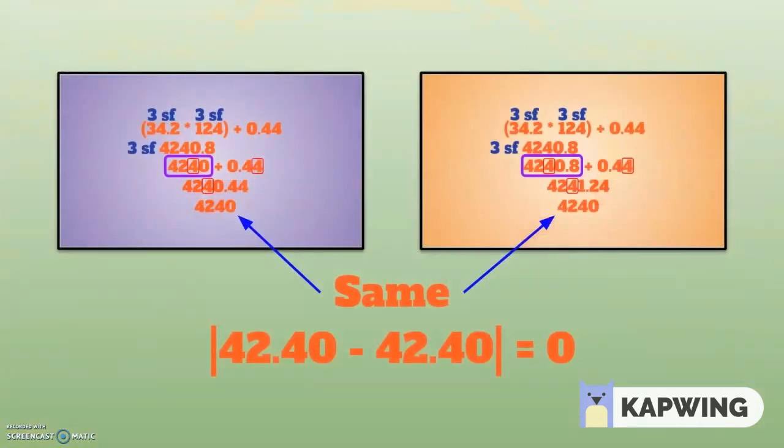The program then applies the two techniques of intermediate and non-intermediate rounding to the inputs. If the absolute value of the difference of outputs equals zero, then the program does not record the inputs. However, if it does not, the program prints the inputs.